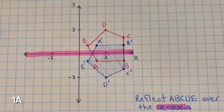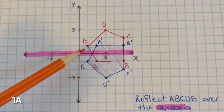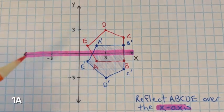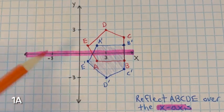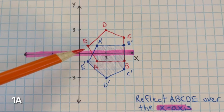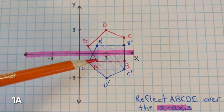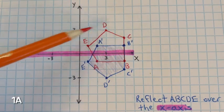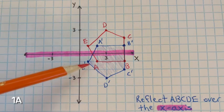For problem 1a, you need to reflect figures a, b, c, d, e over the x-axis. So I highlighted the x-axis so that way you remember which axis you're reflecting over. So we have figures a, b, c, d, e, and we're going to reflect them over the x-axis.